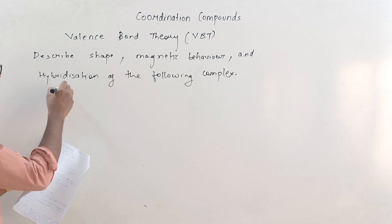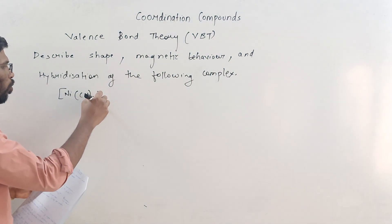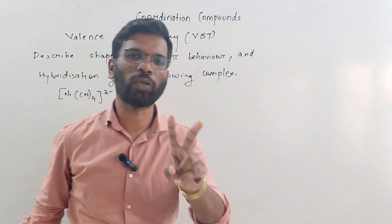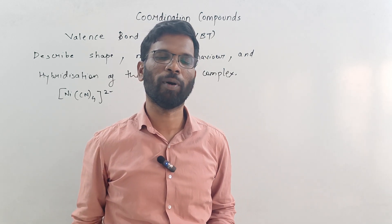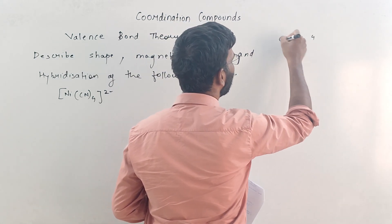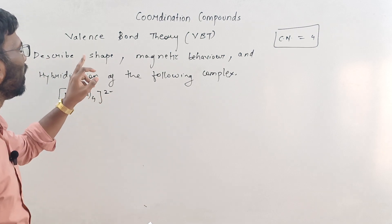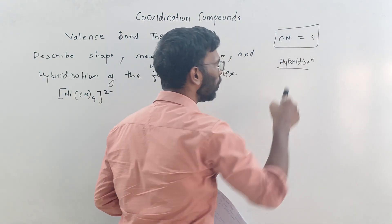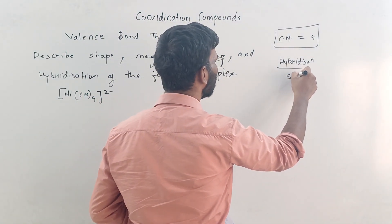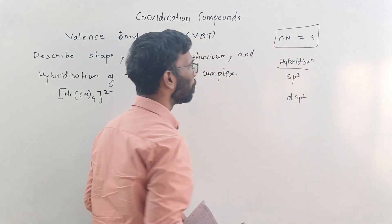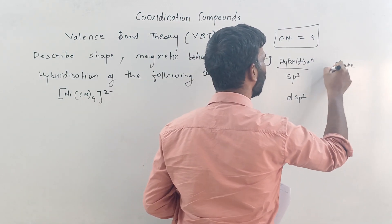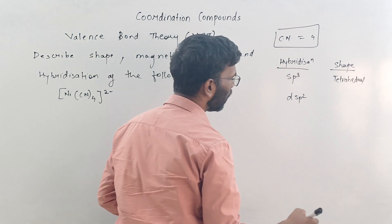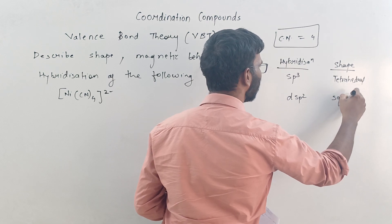The complex is nickel CN4 2-. Before we solve this question, you should know certain tricks. In your syllabus there are only two coordination numbers: 6 and 4. Whenever coordination number is 4, there are two possibilities for shape and hybridisation. One possibility is SP3 and the other is DSP2. If hybridisation is SP3, the shape is tetrahedral. If hybridisation is DSP2, the shape is square planar.